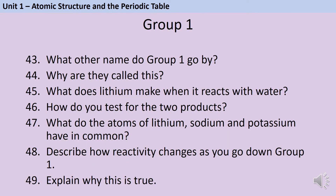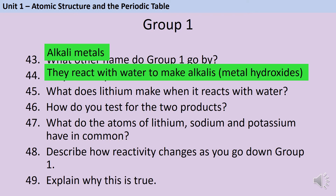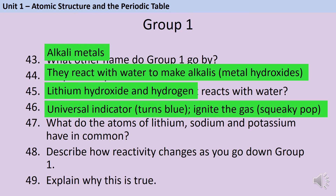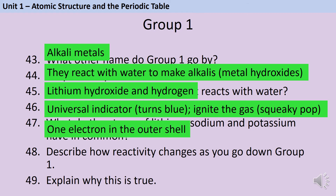Group 1 are also known as the alkali metals because when they react with water they produce alkalis — metal hydroxides. When lithium reacts with water it makes lithium hydroxide and hydrogen gas. Being an alkali, lithium hydroxide can be tested for using universal indicator, which will turn blue, and to test for hydrogen you ignite the gas, which will burn rapidly with a squeaky pop sound. The atoms of lithium, sodium and potassium all have one electron in their outer shell.